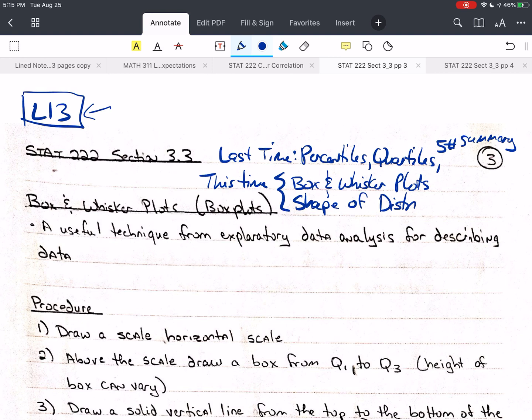Last time, we talked about percentiles. If you had, say, the 78th percentile, then 78% of the values would be below that value. We talked about quartiles, the first, second, and third quartiles, and we said that those were the 25th percentile, the 50th percentile, which is also the median, and the 75th percentile.